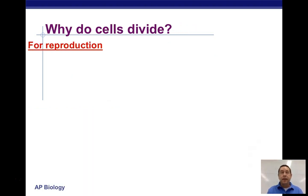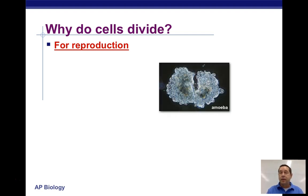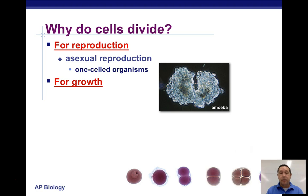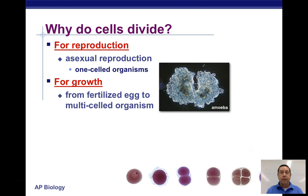So why do cells divide? One reason is for making more living things — reproduction. Things like amoebas use asexual reproduction, which doesn't involve sperm and egg. That simply is where a cell splits into two through mitosis. This is primarily one-celled organisms that use asexual reproduction. To grow, you've got to make more cells — from that fertilized egg to a multi-celled organism, you've got to make more cells. That's cell division.